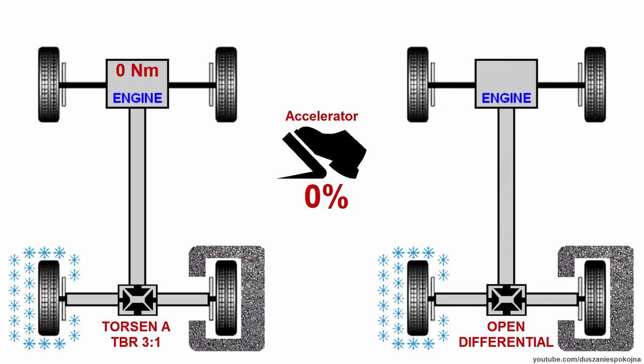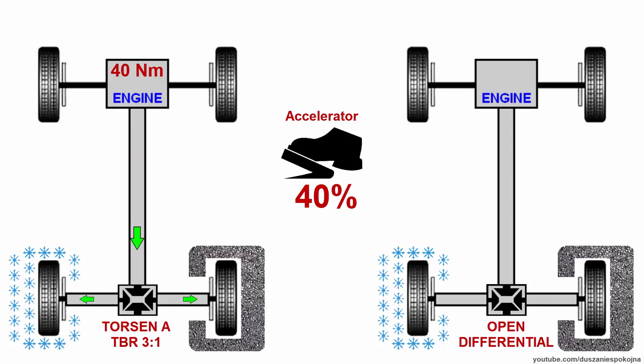The situation is different with Torsen. If you are sending 40 Nm there, the wheel on snow still gets only 15. Traction is not lost. The remaining 25 is taken by the right wheel.